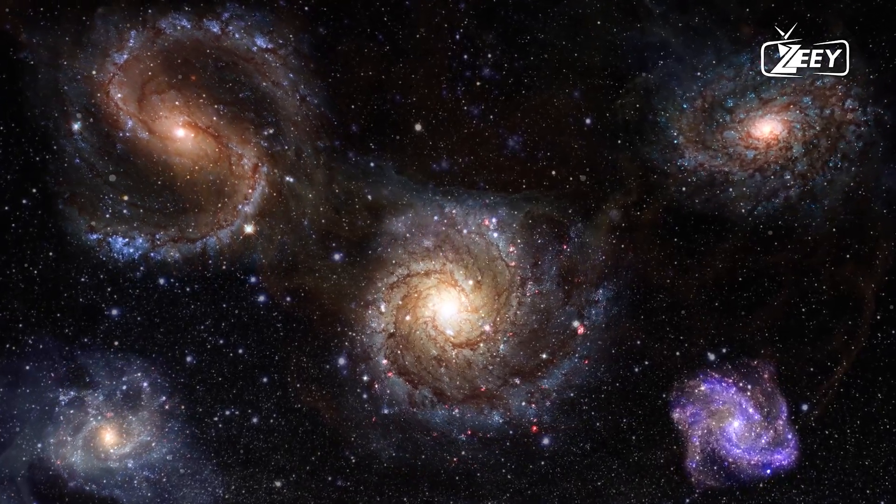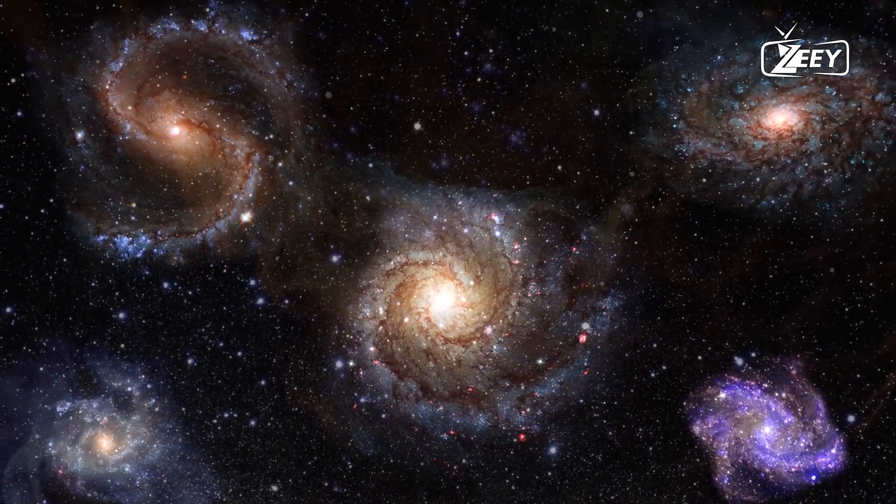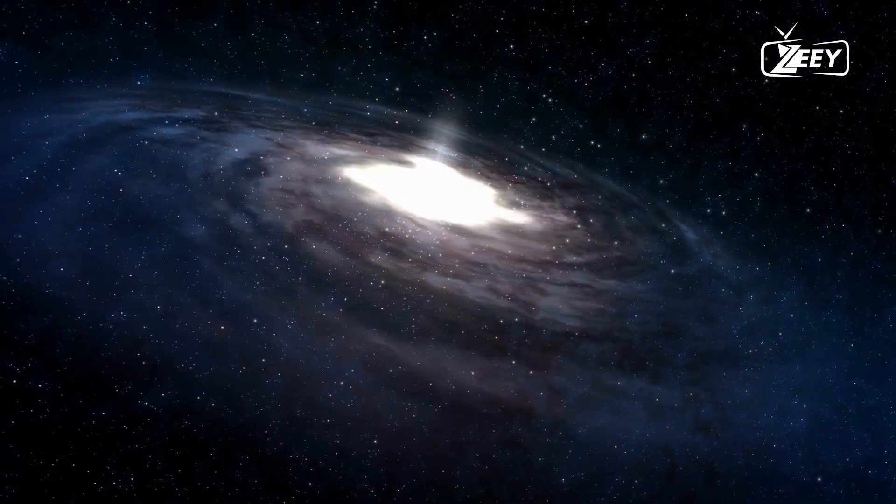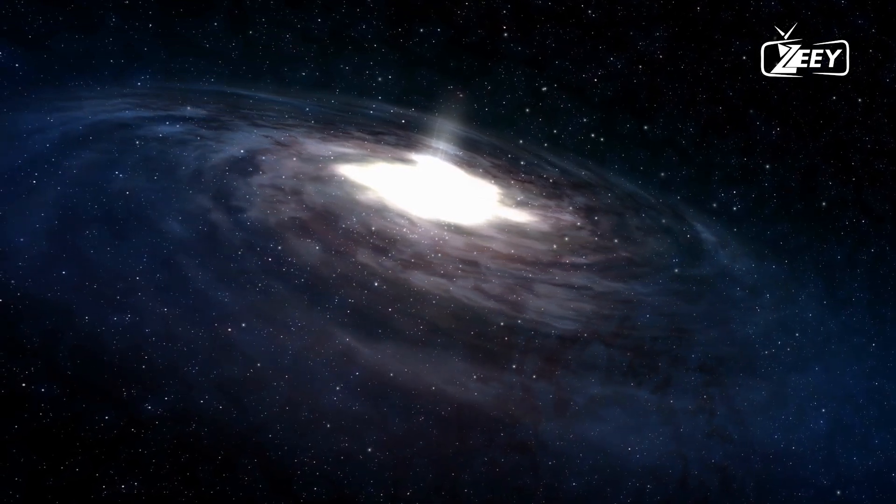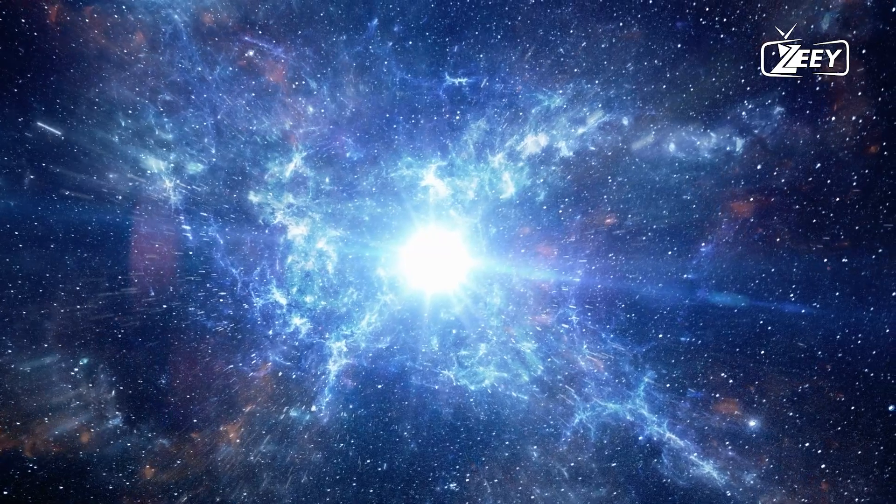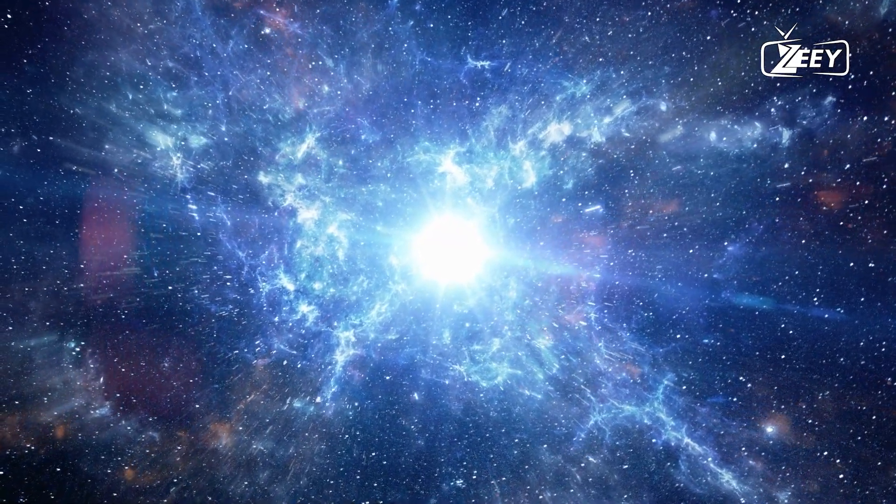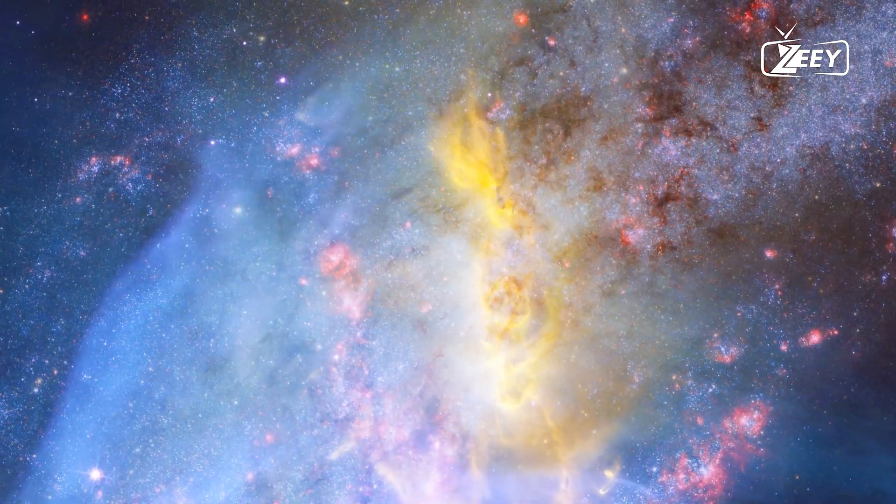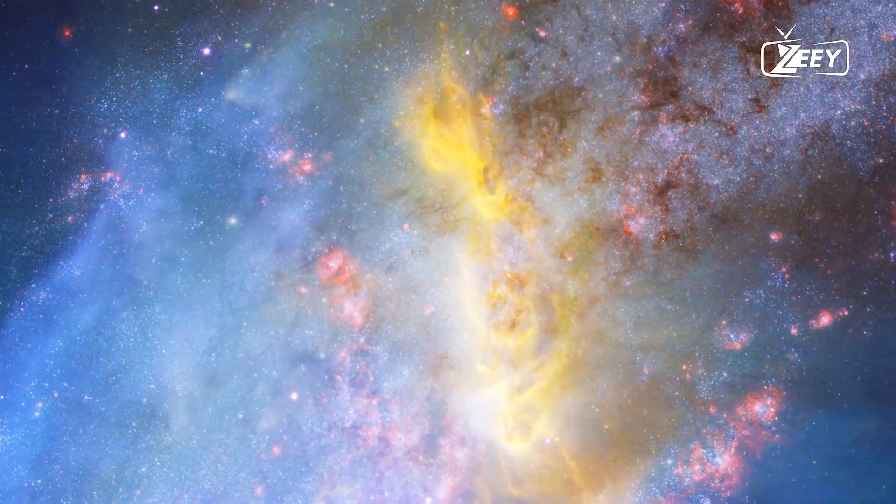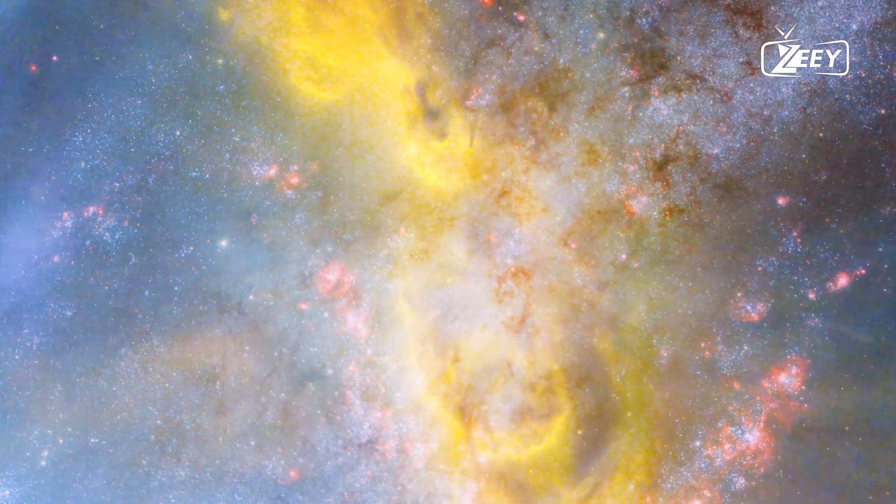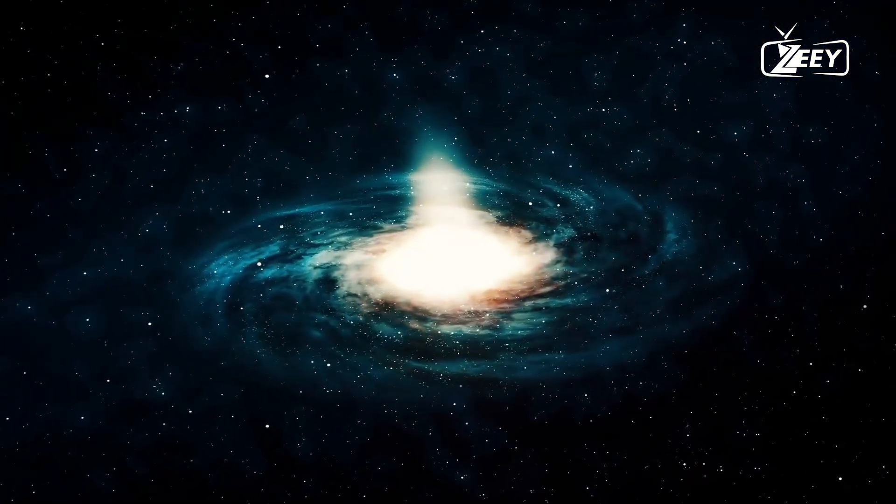If we were near the Milky Way's core, we would see globular clusters scattered across the sky. Instead, most are visible near the galactic center, indicating our position towards the outer arm. Shapley's calculations overshot our distance from the galactic center, estimating 33,000 to 90,000 light-years. Modern astronomy has refined this to about 26,000 light-years, placing our solar system in the Orion arm between the Sagittarius and Perseus arms.